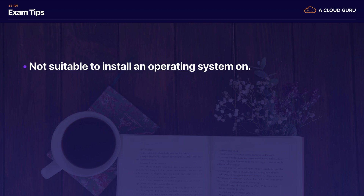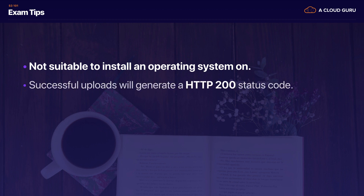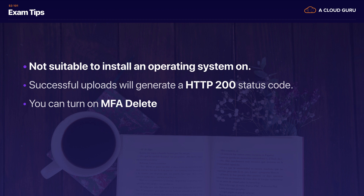Because S3 is object-based, it's not suitable to install an operating system or a database on — for that you want block-based storage. S3 is only used to store files. When you successfully upload an object to S3, you get an HTTP 200 status code. Also remember that you can protect your objects by turning on multi-factor authentication delete, so someone accidentally deleting an object will need to complete multi-factor authentication.